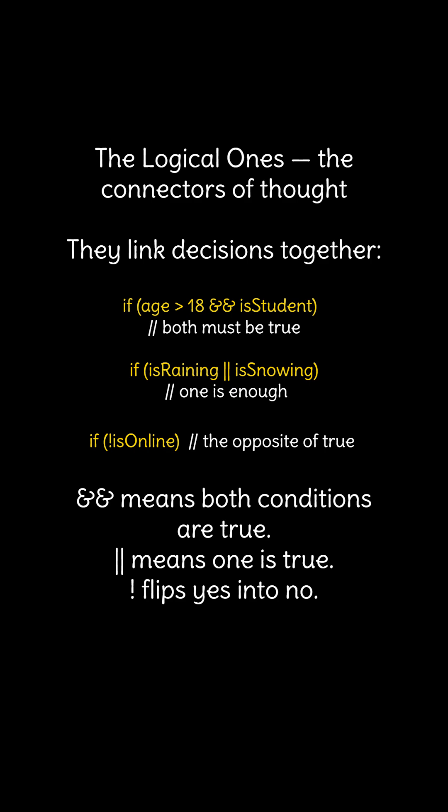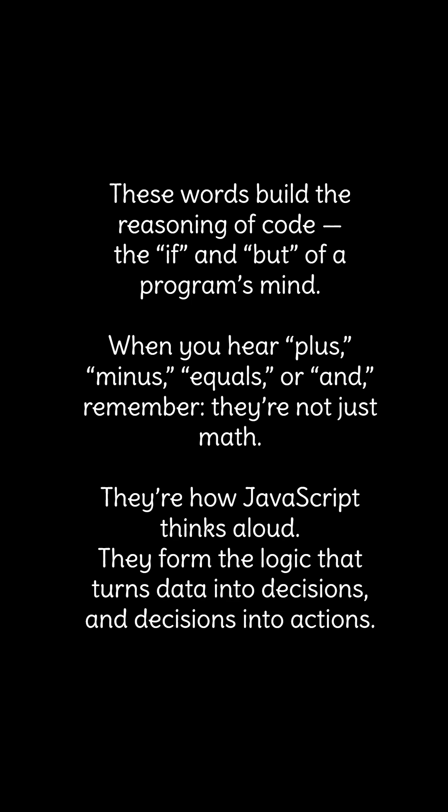When the logical ones — the connectors of thought. They link decisions together. If age greater than 18 and is student, both must be true. If is raining or is snowing, one is enough. If not is in line, the opposite of true. And means both conditions are true. Or means one is true. Not flips yes into no.